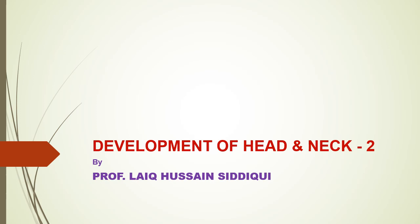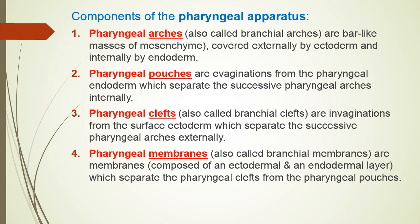Bismillahirrahmanirrahim. Dear students, we continue with our discussion of development of the neck. We are discussing the pharyngeal apparatus, and this slide shows the four components: pharyngeal arches, pharyngeal pouches, pharyngeal clefts, and pharyngeal membranes. Today's discussion will be about the pharyngeal pouches, because in the last lecture we discussed the pharyngeal arches.